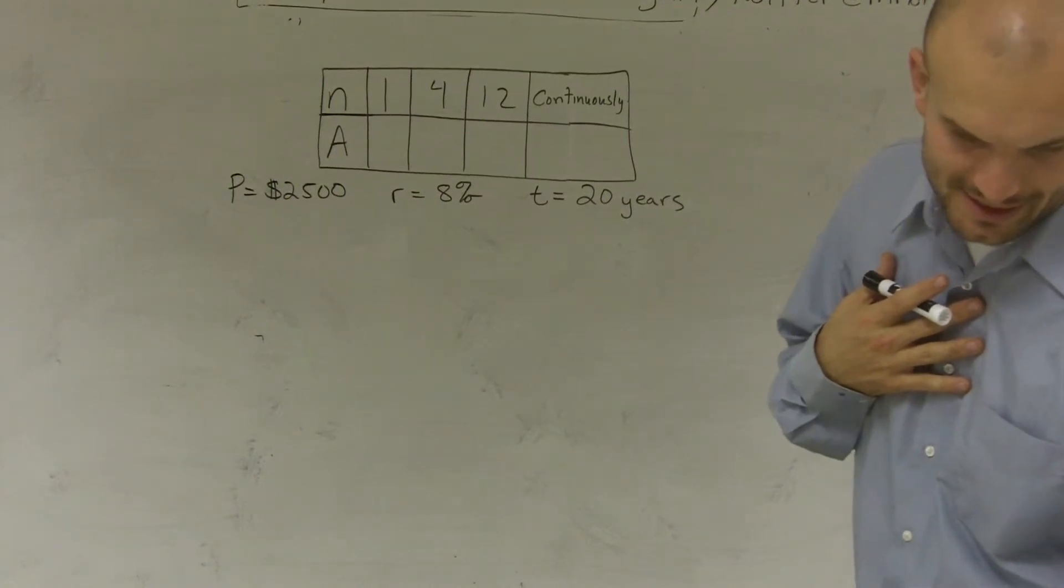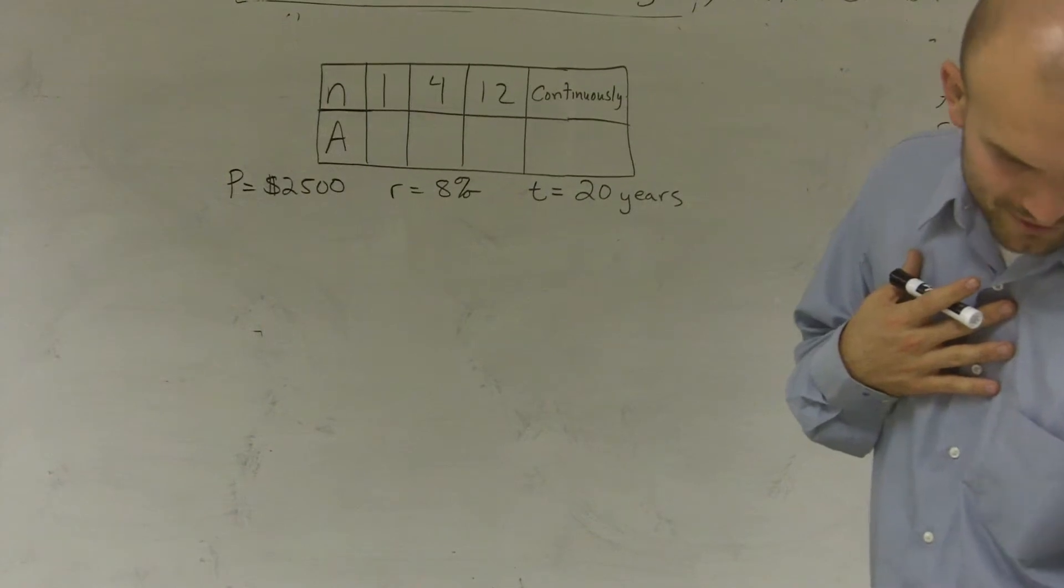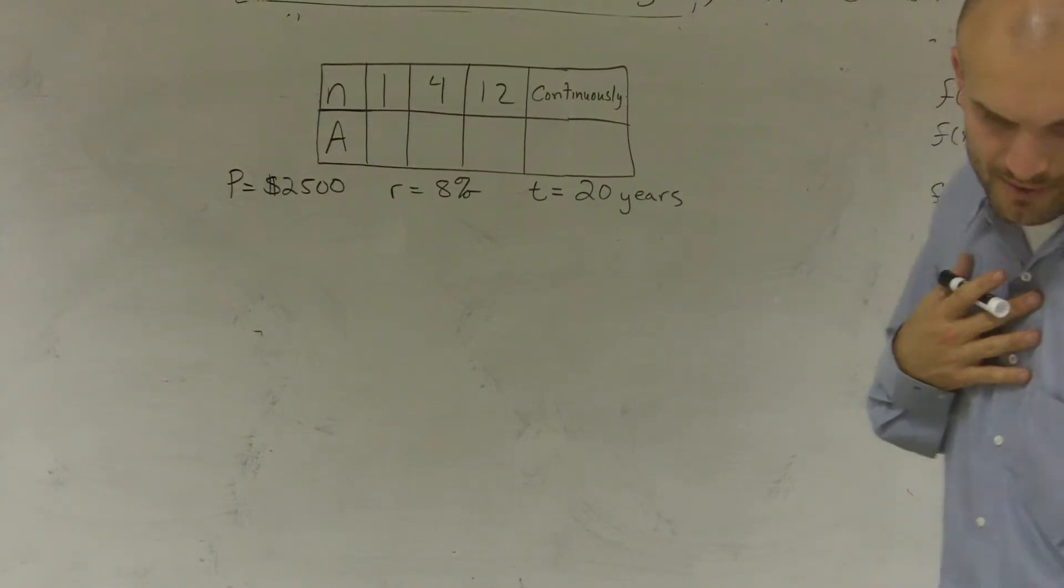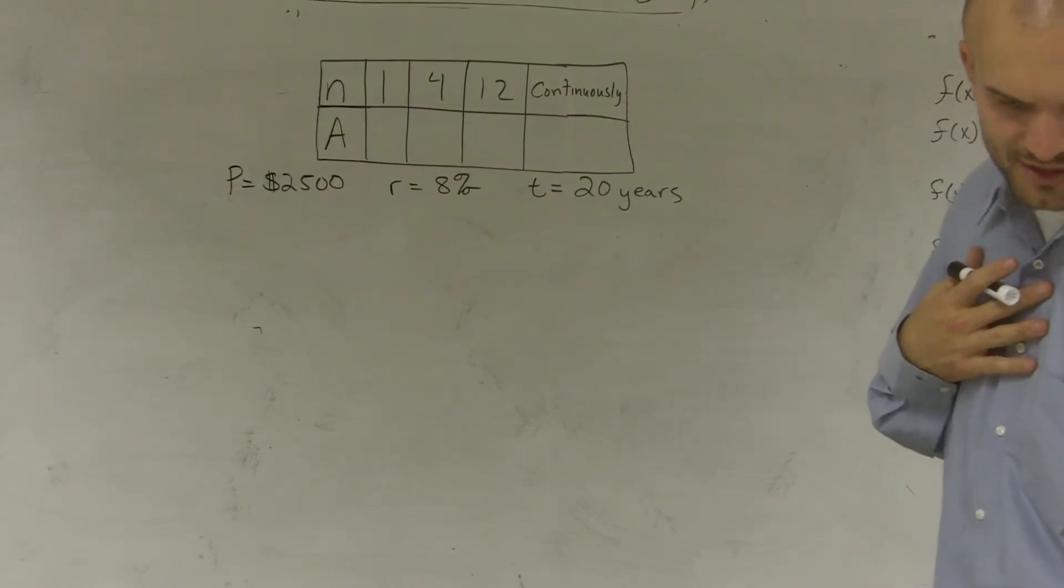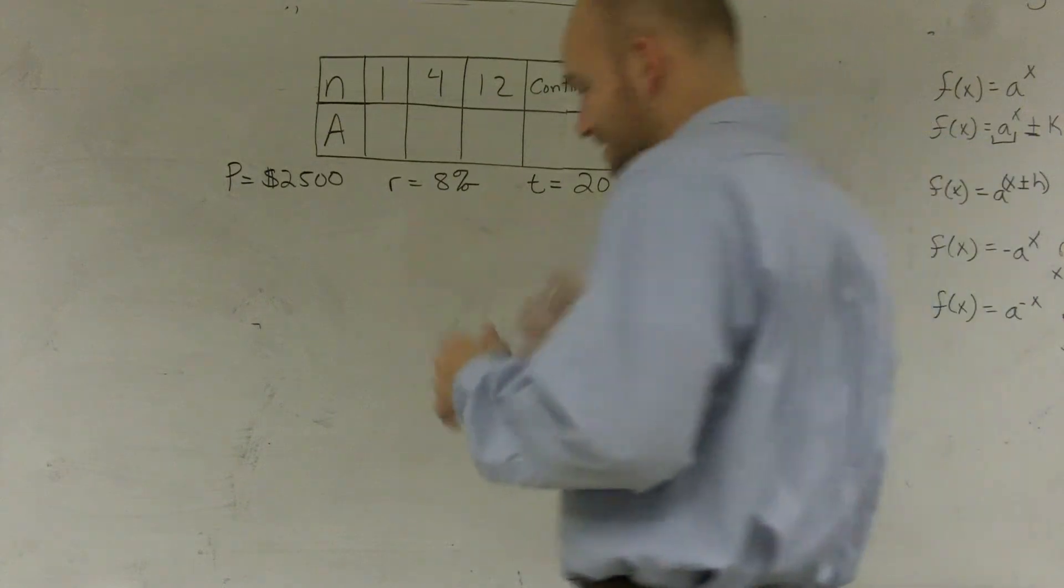So in this problem, what it's asking us to do is to find, actually, it's saying to fill out the table. But it says, complete the table to determine the balance A for P dollars invested at rate R for T years and compounded N times per year. So that probably doesn't make any sense, but let's take a look at it.